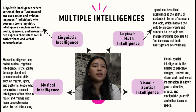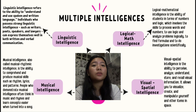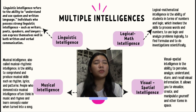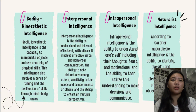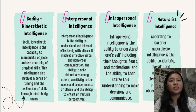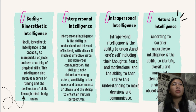The next one is visual-spatial intelligence. It is the ability to perceive, analyze, understand, store, and recall visual information — allowing you to visualize, create, and manipulate yourself and other items in space, or in other terms, visualizing the world in 3D. Next is bodily-kinesthetic intelligence — the capacity to manipulate objects and use a variety of physical skills. This intelligence also involves a sense of timing and perfection of skills through mind-body union. People with this intelligence include dancers and athletes, as it requires coordination of mind and body.